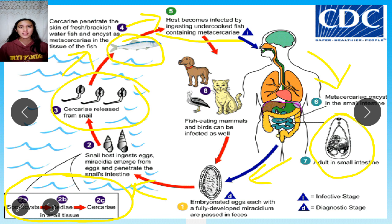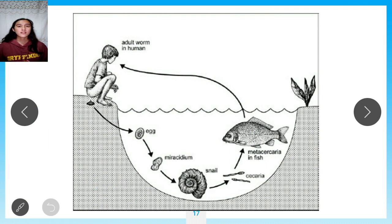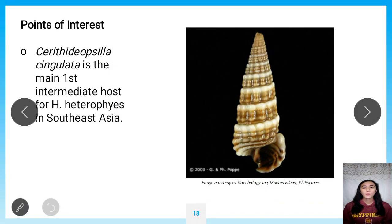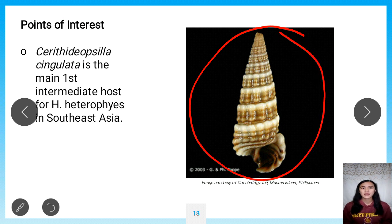The metacercariae are now ready to infect another human who eats raw or undercooked fish. Notably, not only man serves as a definitive host — fish-eating mammals like dogs and cats, and also birds, can be infected as well. In summary: man defecates near bodies of water releasing eggs, which penetrate snails; snails release cercariae, which penetrate fish; fish are then ingested by man, repeating the cycle. A point of interest: Cerithidopsylla cingulata is the first main intermediate host for heterophaeids in Southeast Asia.